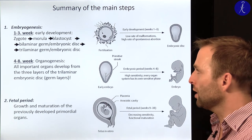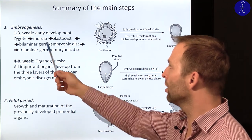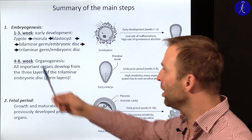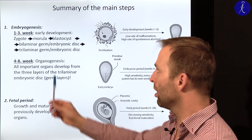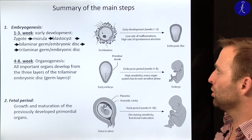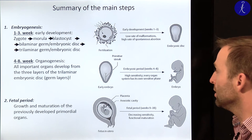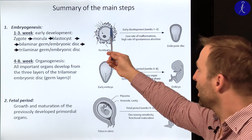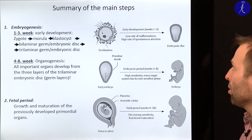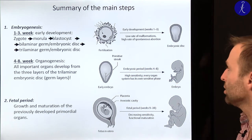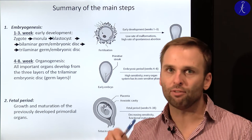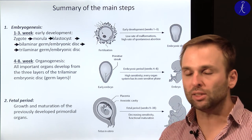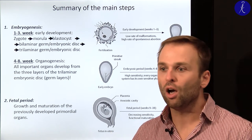Inside the blastocyst, the inner cells will form a bilaminar embryonic disc, which then develops further into a three-layered trilaminar embryonic disc. During this stage — from fertilization to the three-layered embryonic disc — there is a low rate of malformations but a high rate of spontaneous abortion. It's all or nothing: either the damage is compensated and the baby is born healthy, or it will be aborted.